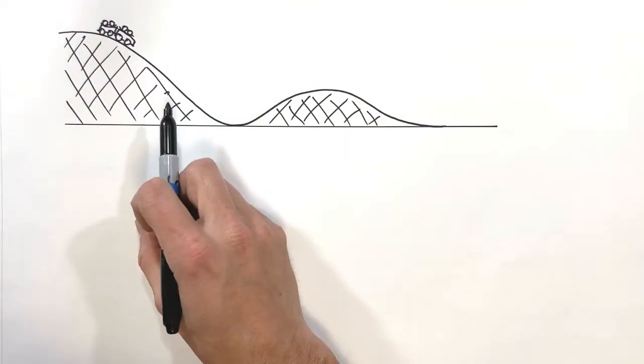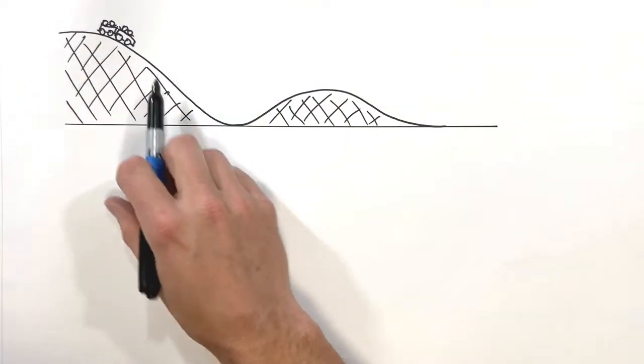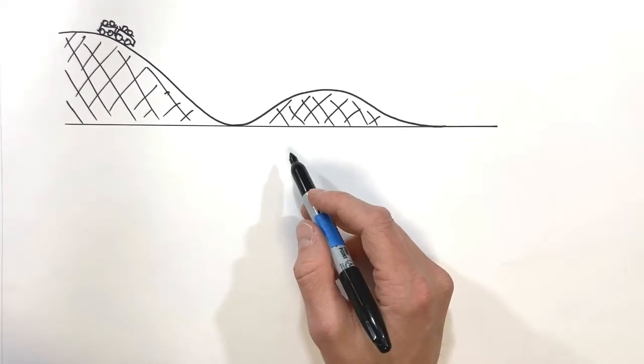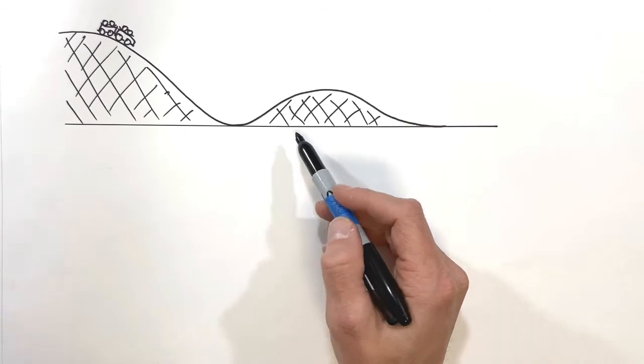Okay, today we're going to talk about potential energy functions. To do that, I want to take a look at a roller coaster and a roller coaster track.